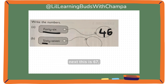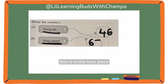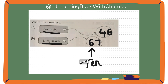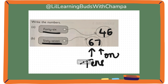Next, this is 67. So, 67. This digit is in the tens place and this digit is in the ones place. So, 67.